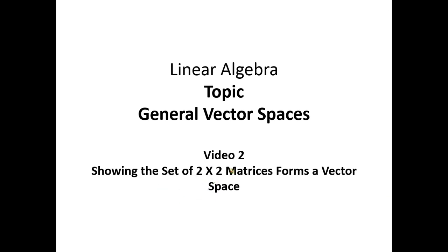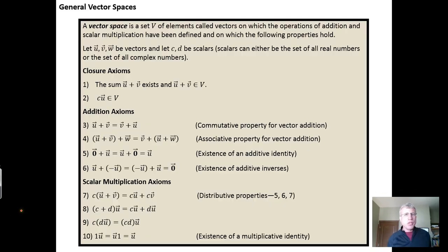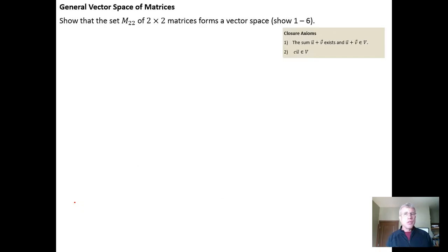In this video, we want to show that the set of all 2×2 matrices, which we denote M₂₂, forms a vector space. To do this, we need to step through and show that these 10 axioms or properties hold. I'm going to do the first 6, and then you're going to do the last 4 in the homework assignment. We just walk through and show that each of the 10 axioms holds.